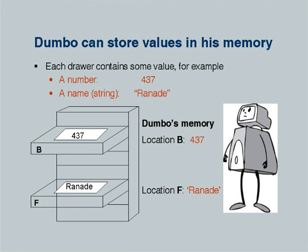Each drawer contains some value. For example, a drawer can contain a number — here we have shown number 437 being contained in a drawer marked B, so Dumbo's memory location B contains 437. Similarly, Dumbo's memory location F contains a string called 'Ranade' — that is the name of my colleague, Professor Abhiram Ranade, head of the computer science department at IIT Bombay. This clearly introduces to students that Dumbo can store not only numerical values but also character strings inside these drawers.